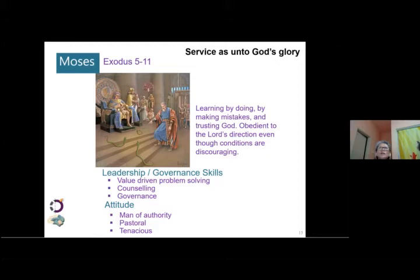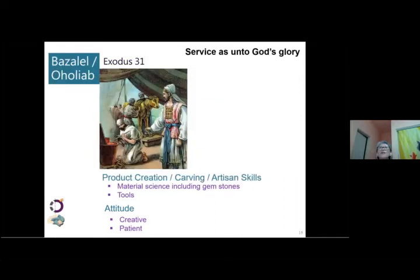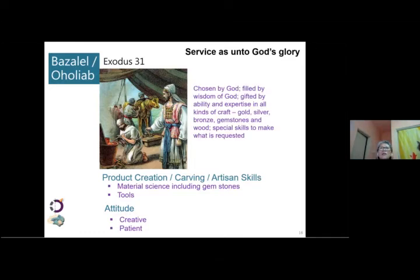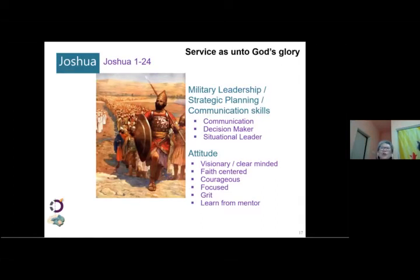In Exodus 31, Bezalel and Oholiab — I like this because clearly the scripture talks about them being chosen by God, filled with the wisdom of God, gifted with ability and expertise in all kinds of craft. God not only used them, He appointed them, gifted them, and then used them to build the various articles for the tabernacle. Joshua is a military leader who does strategic planning and communicates well. In terms of attitude, he's visionary, clear-minded, faith-centric, courageous, focused, has grit, and learned from his mentor Moses.